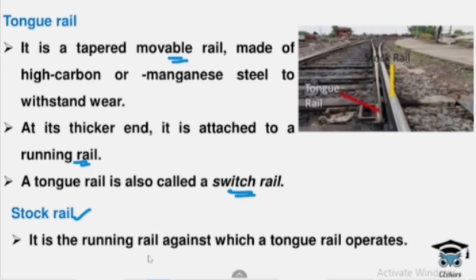A tongue rail also uses a switch rail. The stock rail is the running rail against which a tongue rail operates. We use a tongue rail to adjust the stock rail. If there is a running rail in the main section, there is also a train that comes from there and we divert it at a particular point. We have to use pieces of rail sections joined with bolts. We have to use a single rail section in the tongue rail.